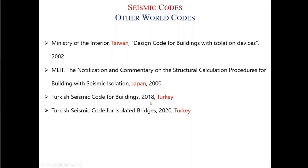In Turkey, we have two codes for building type structures. The existing code has a 14th chapter devoted to seismic isolated building design, and there is also a new dedicated code for seismic isolated buildings, published in 2020.